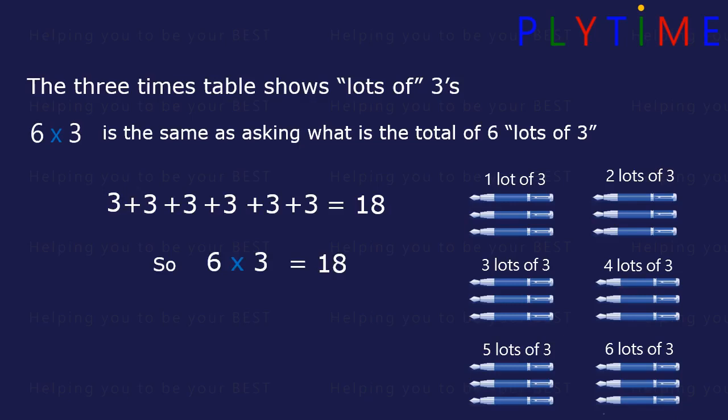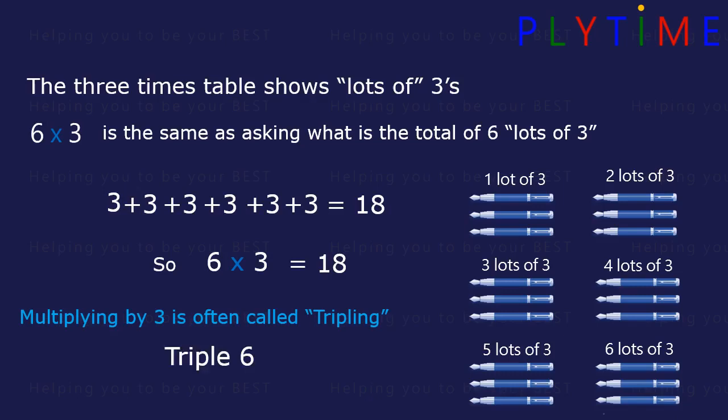Multiplying by three is often called tripling. Triple six equals eighteen.